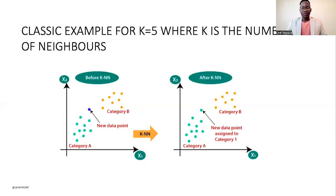This is a classic example for K equals 5, where K is the number of neighbors. Suppose we have a new data point and it either belongs to category A or category B. After applying the KNN module, we find that the new data point is assigned to category 1. This is because the new data point has a lot of similarities to its closest neighbors, which are in category 1.